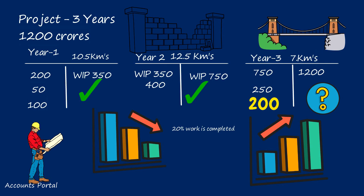If the architect certifies that 20% of work is completed, revenue is recognized as 20% of the contract price. Sometimes work may have been completed but the architect is unable to certify it because it has not progressed to the next level or because calculating percentages is complicated — this is termed work uncertified. Work has been completed but not certified, similar to goods produced and not sold being called closing stock. In the next session, we will learn about how much amount is received from the contractee as certified by the architect, and how much profit should be transferred to the P&L.